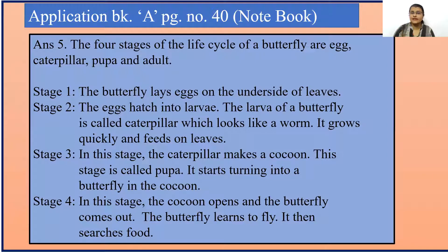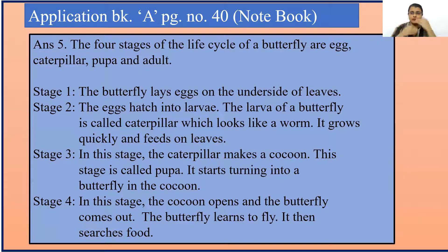Stage 1: The butterfly lays eggs on the underside of leaves. The eggs hatch into larvae. The larvae of a butterfly is called caterpillar, which looks like a worm. It quickly feeds on leaves. In stage 3, the caterpillar makes a cocoon and this stage is called pupa. It starts turning into a butterfly in the cocoon. And in the fourth stage, the cocoon opens up and the butterfly comes out. The butterfly learns to fly.